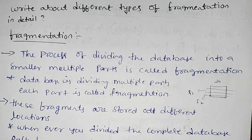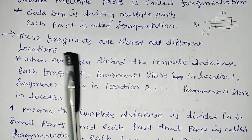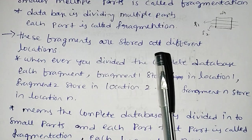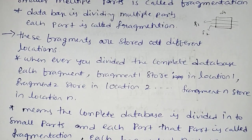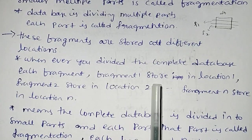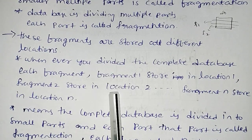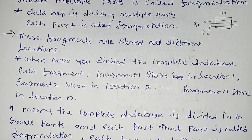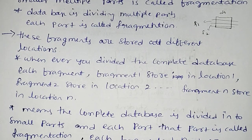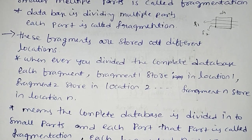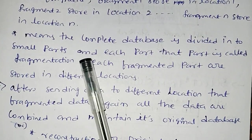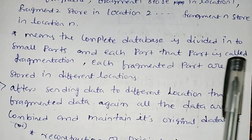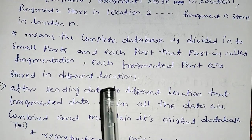Or columns — we split it in rows or columns. These fragments are stored at different locations. Whenever you divide the complete database, each fragment is stored at a different location: fragment one stored in location one, fragment two stored in location two, up to fragment n. The complete database is divided into small parts and each part is called a fragmentation, and each fragmented part is stored in different locations.